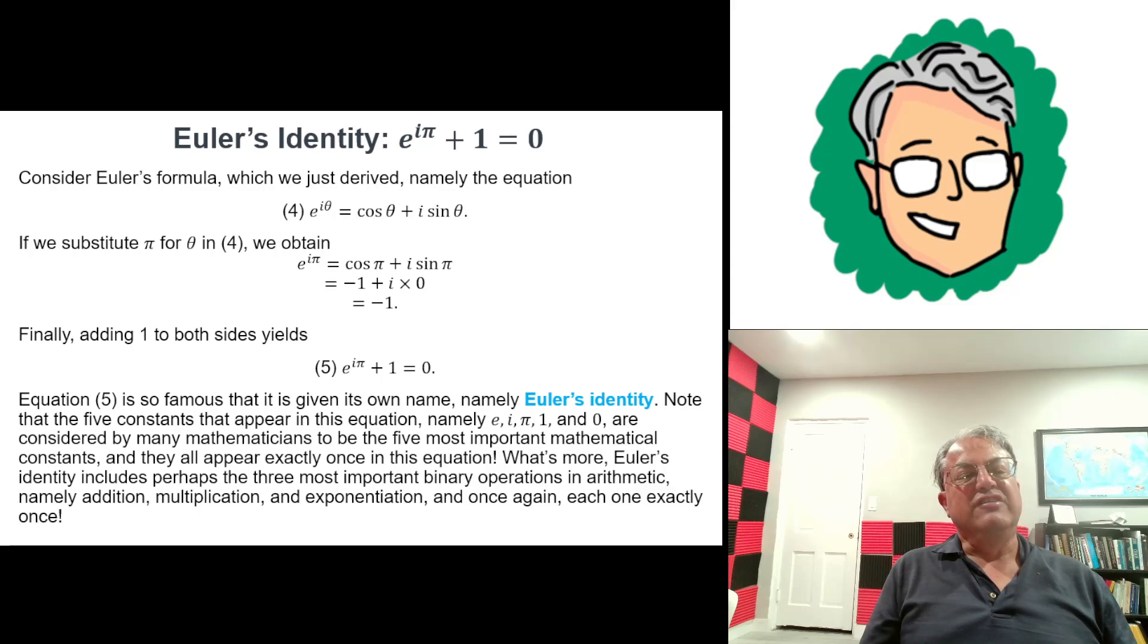And if that's not enough, then there's also three binary arithmetic operations in this equation, namely addition—we have plus in the middle—and also multiplication, we're multiplying i times π, and also exponentiation. We're taking e to the power i times π. So this equation not only includes probably the five most important mathematical constants, but it also includes probably the three most important arithmetic operations: addition, multiplication, and exponentiation.